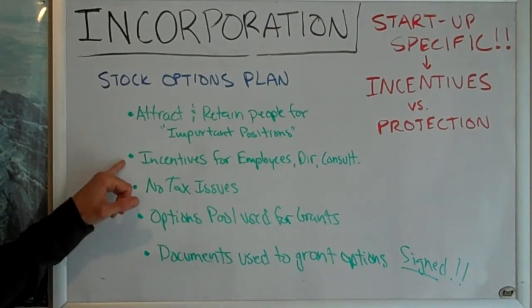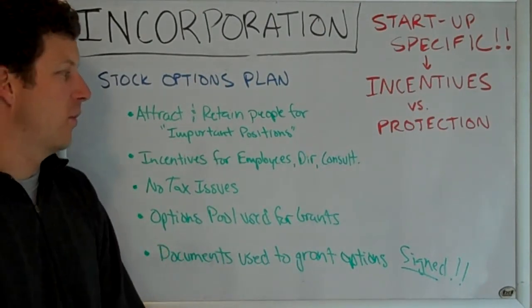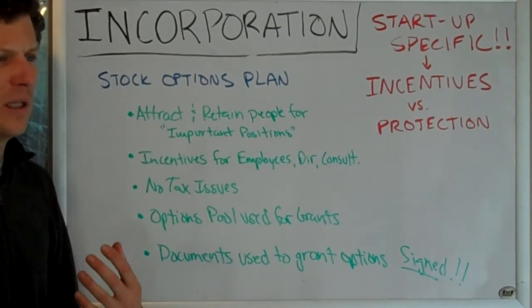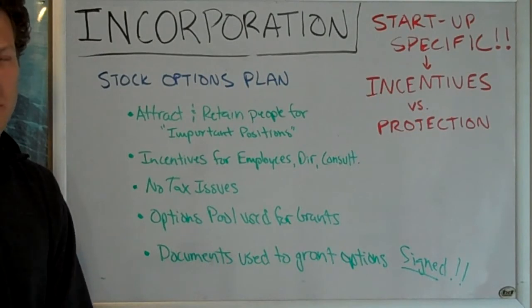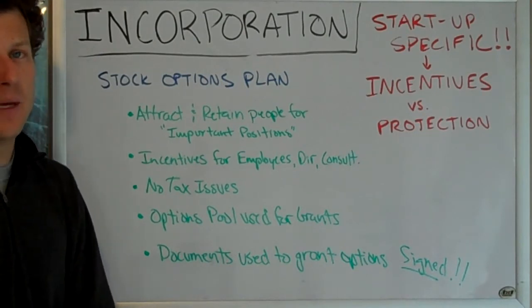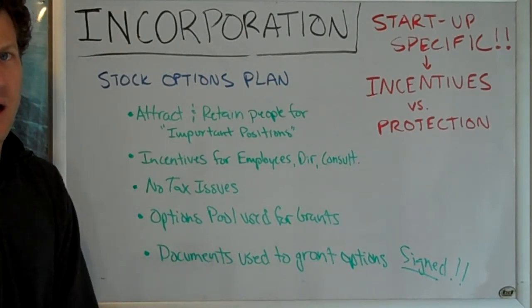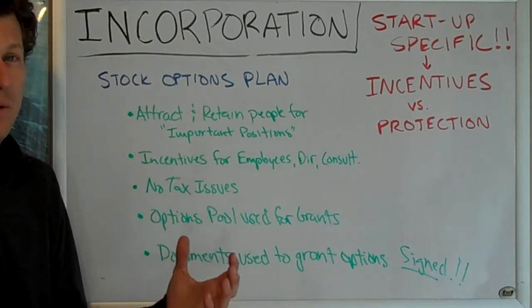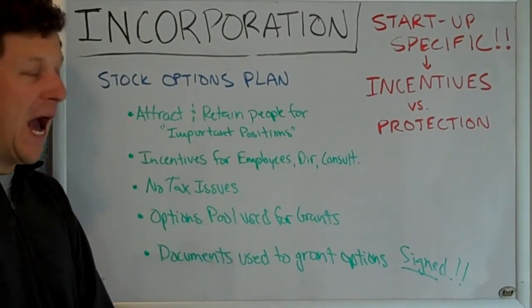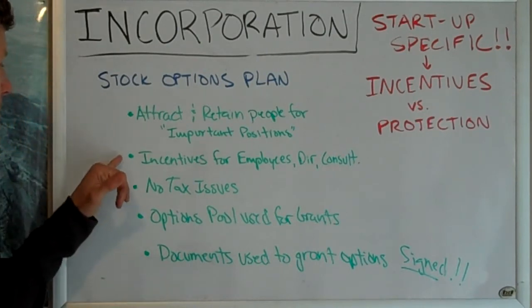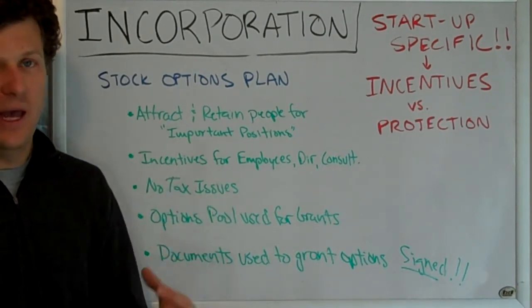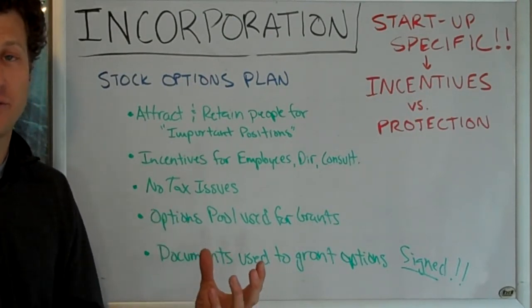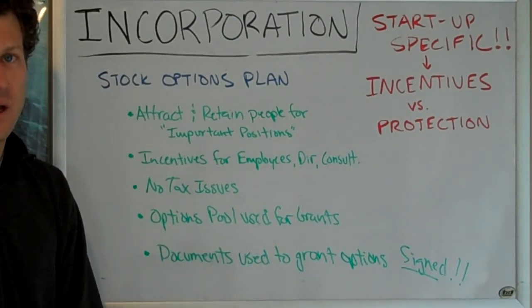The second reason the option plan exists is that it provides incentives for regular employees, directors, or consultants — folks serving any other purpose in your company besides key people. You may give them smaller grants, but it allows you to compensate them for their service. If you don't have cash, service providers or consultants will often take equity in lieu of cash as payment. You can choose to vest those over time or give straight grants.